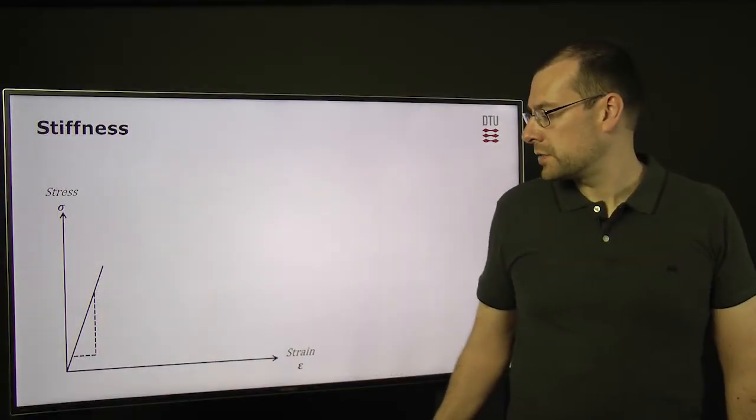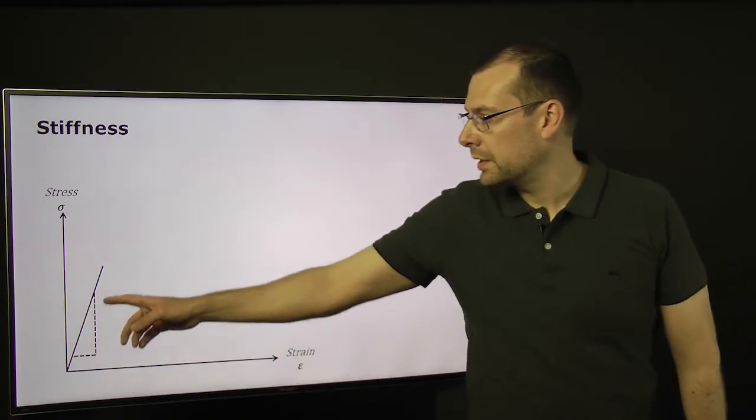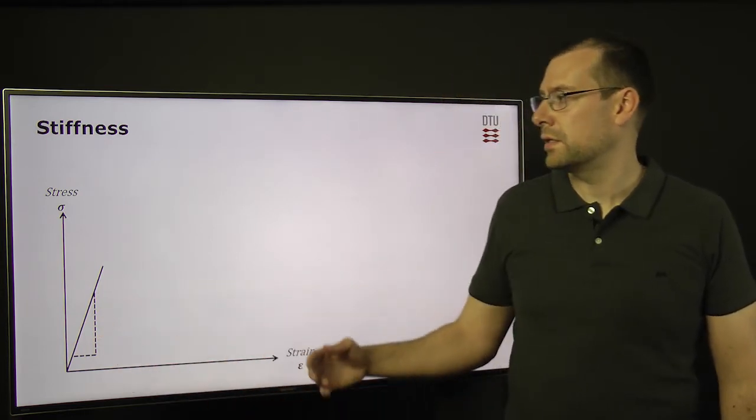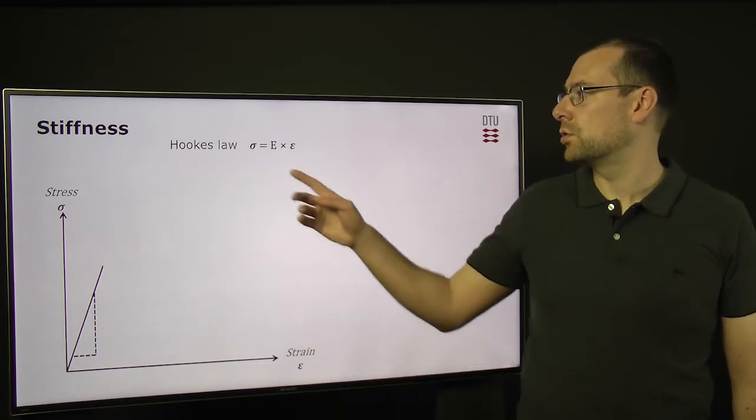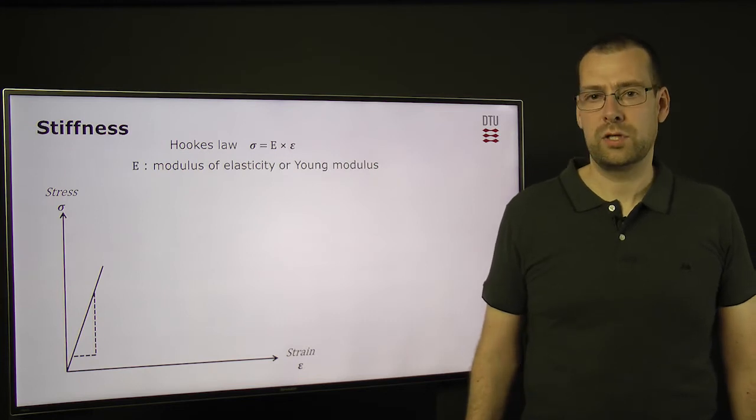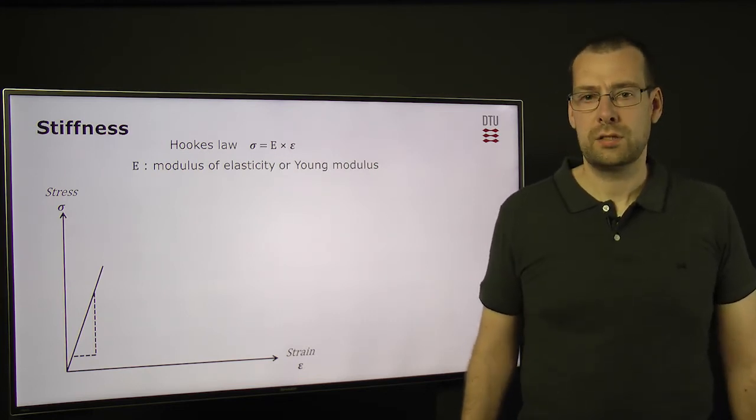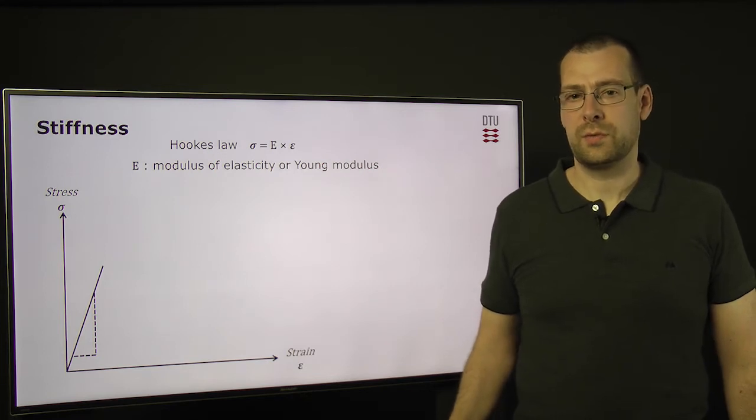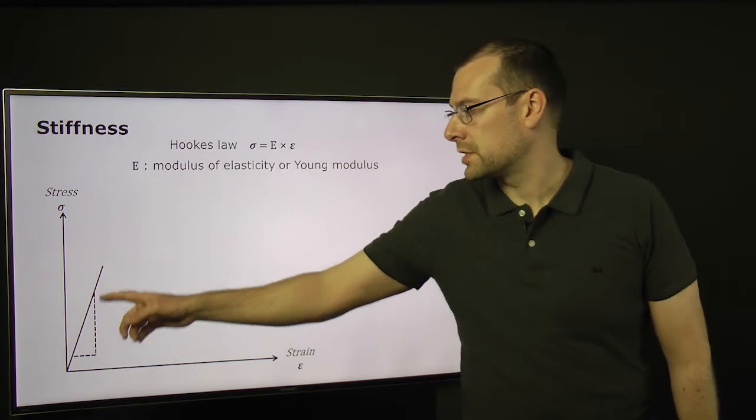Now let's look at the stress-strain curve, where we have a straight line here in the beginning. So there is a linear relationship between the stress and the strain, and this is known as Hooke's Law. Where E here, this is the modulus of elasticity, also known as Young modulus, and this corresponds to the stiffness of the material. So the stiffness is basically the slope of this line here.